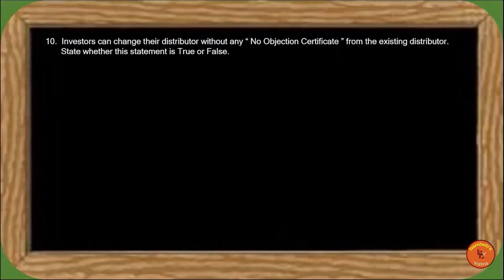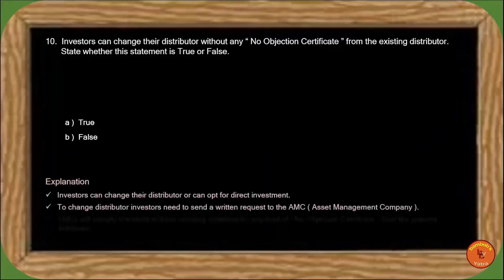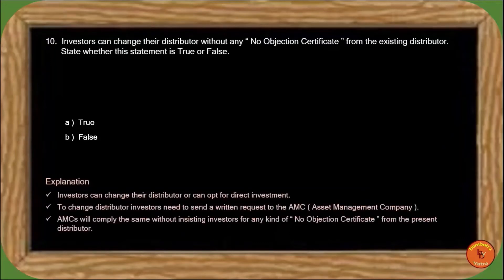Next question: Investors can change their distributor without any no-objection certificate from the existing distributor — state whether this is true or false. Investors can change their distributor and can opt for direct investment. Investors need to send a written request to the AMC to change the distributor. AMCs will comply without insisting investors obtain any kind of no-objection certificate from the present distributor. So the correct answer is option A, true.